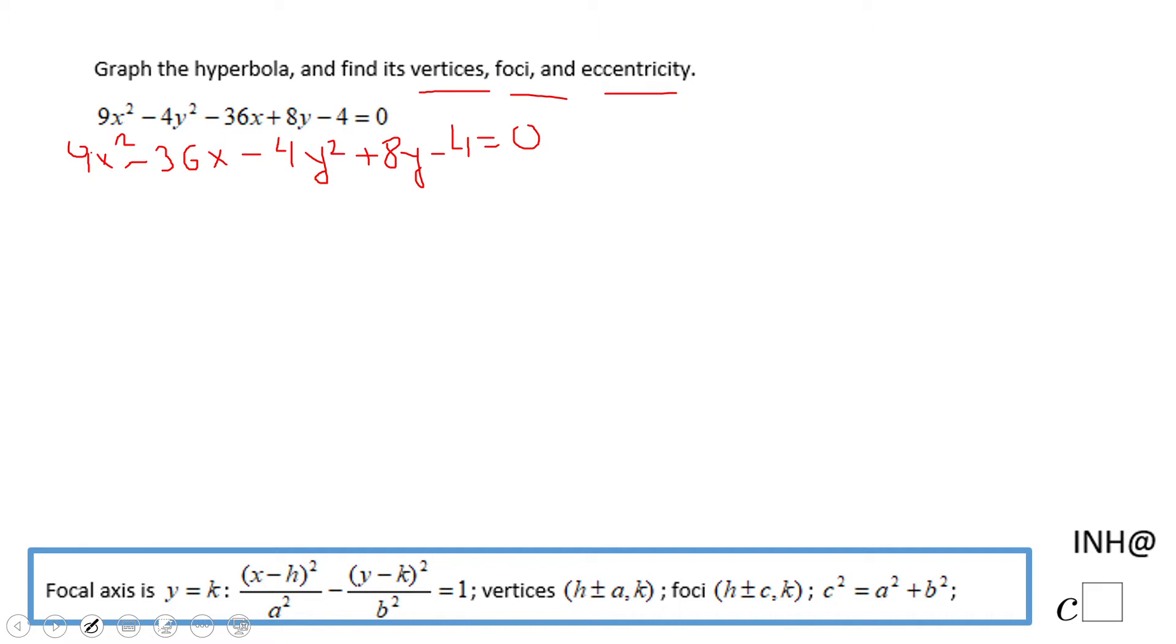Now we're going to factor out, for the x terms, the 9, the coefficient that goes with the x². So then we have here x² - 4. For the second group we're going to factor out the 4, and be careful of the sign here, y² - 2y, minus 4 equals 0.